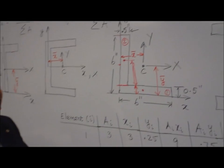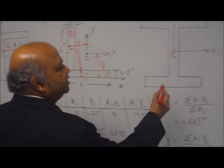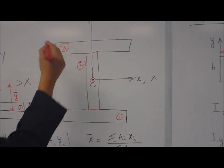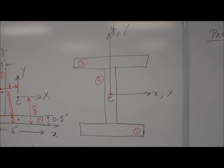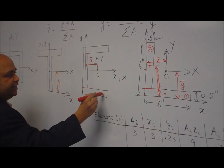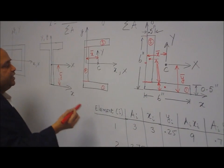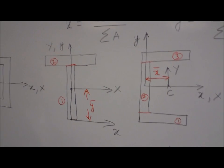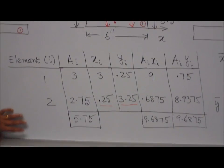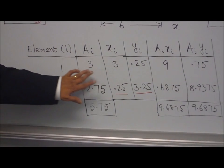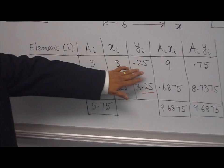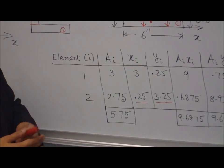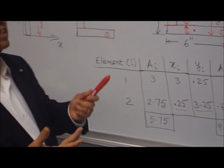That's how we calculate the centroid of any given shape. For an I-section, divide it into three simple rectangles — elements 1, 2, and 3. A C-section can also be divided into three rectangles, and a T-section into two rectangles. For any shape, divide it into simple rectangles and use the table method. The only things you need are the area of each element and the x and y coordinates of its centroid with respect to the reference axis. Once you have those, find the aᵢxᵢ and aᵢyᵢ columns, sum them up, and use the formula to find x̄ and ȳ. That completes the centroid lecture — happy learning!